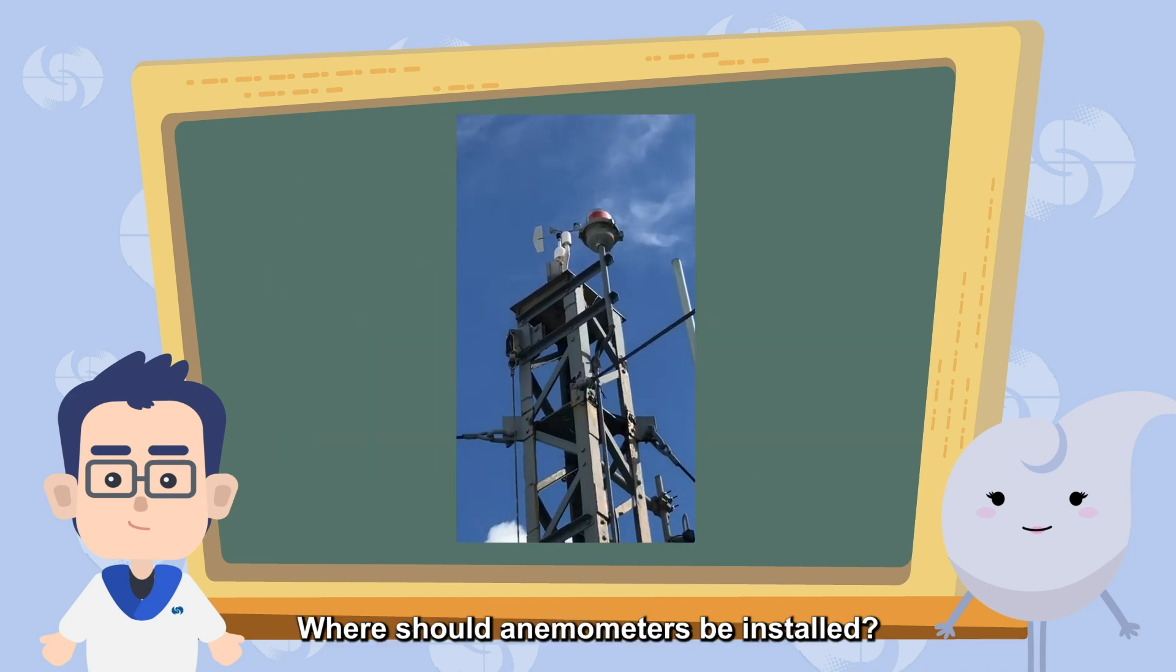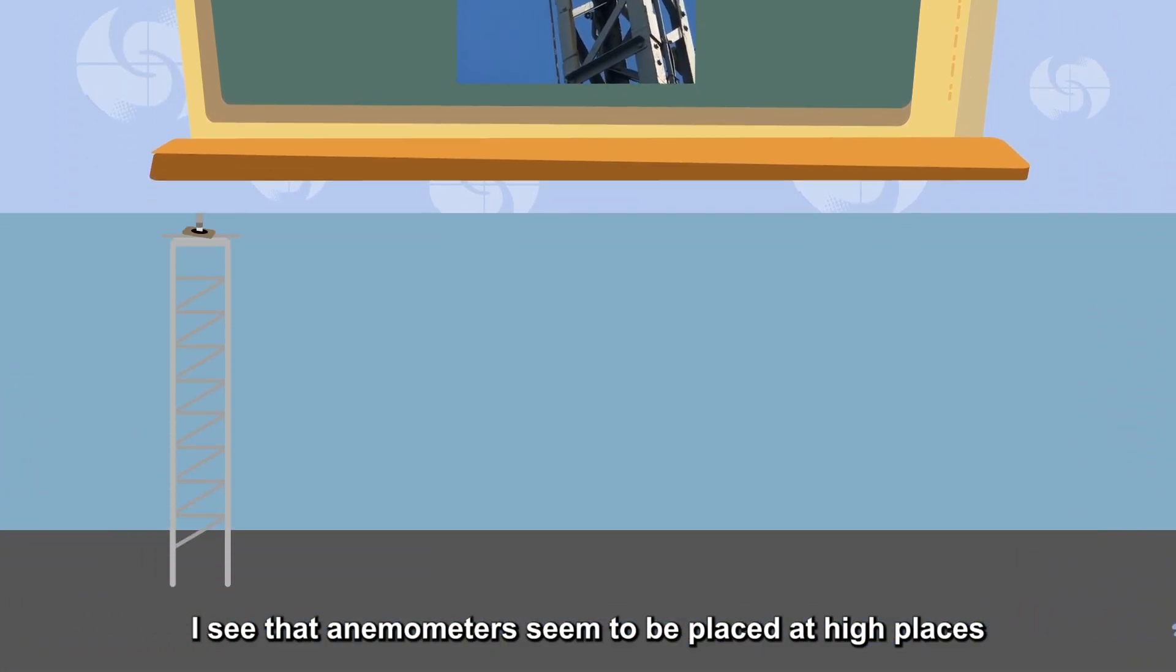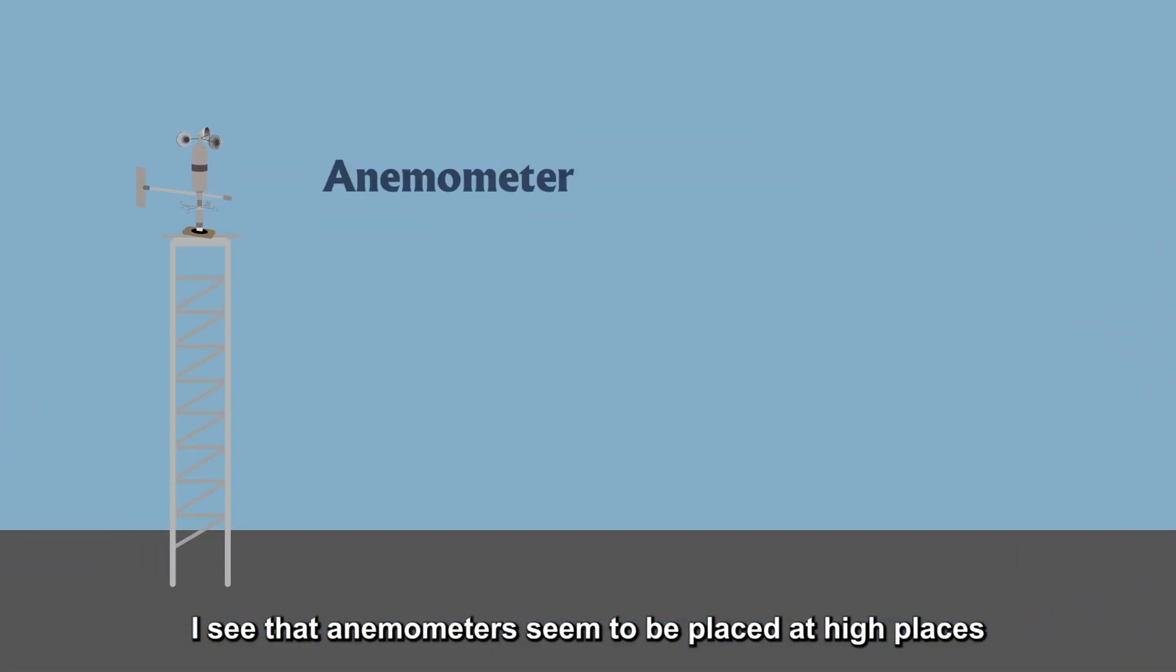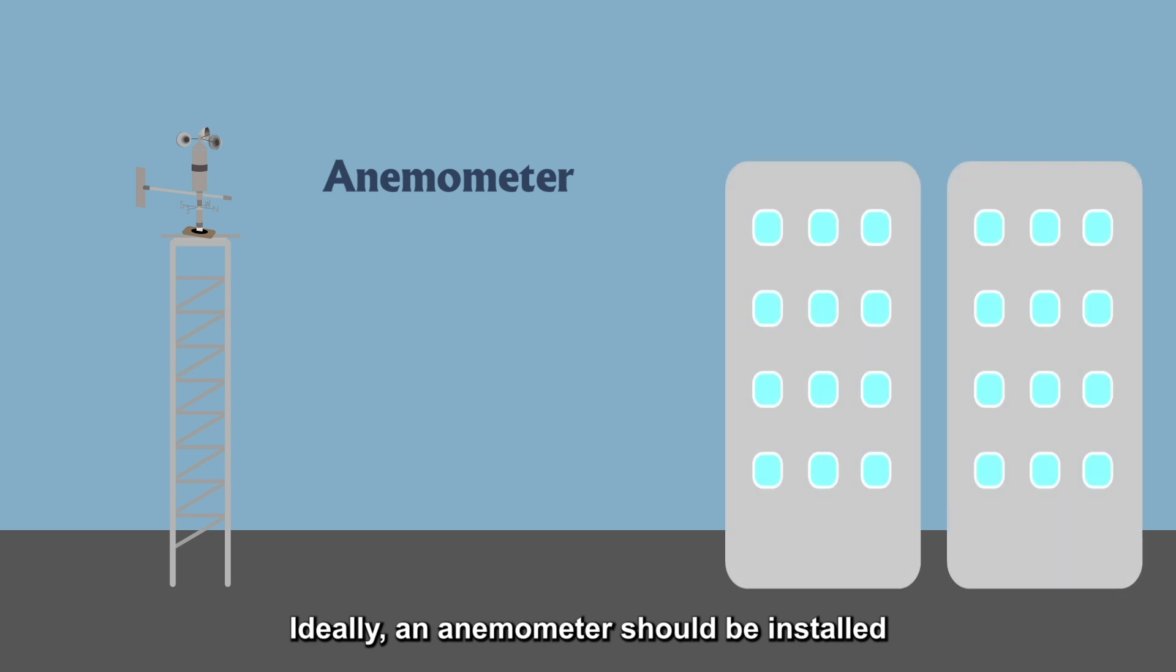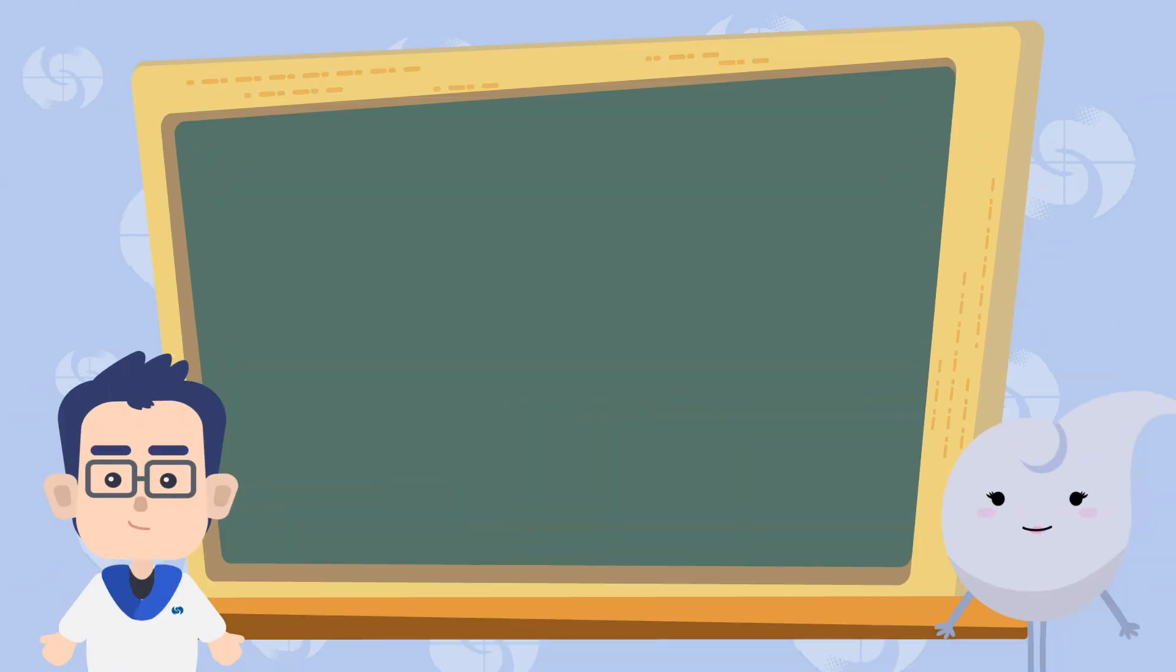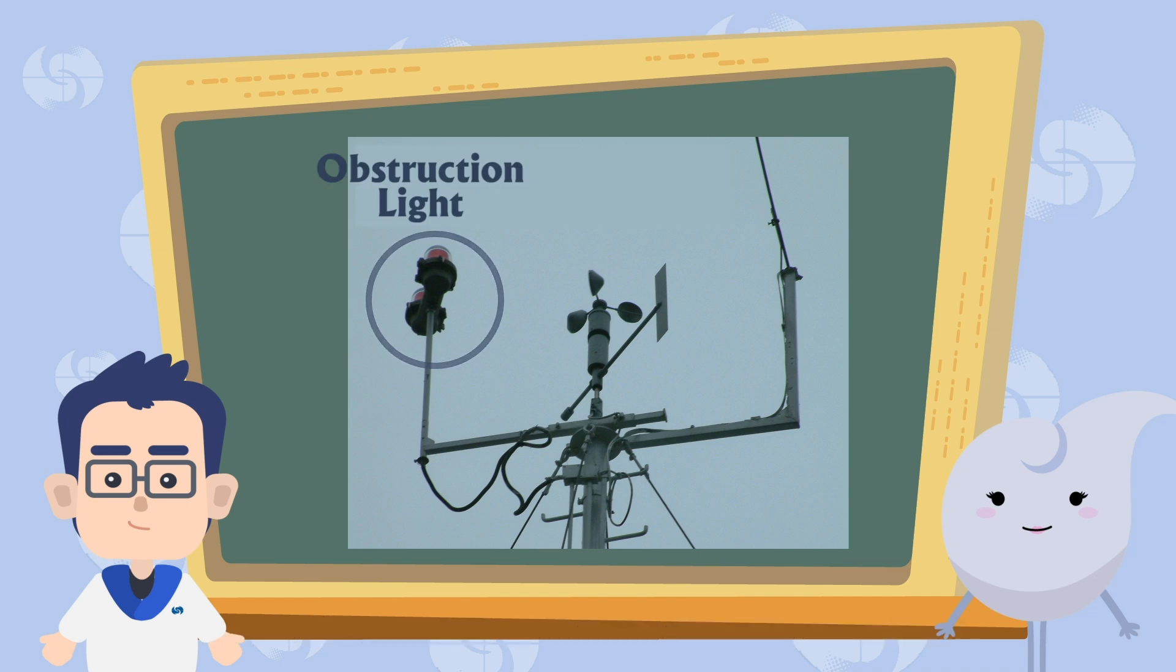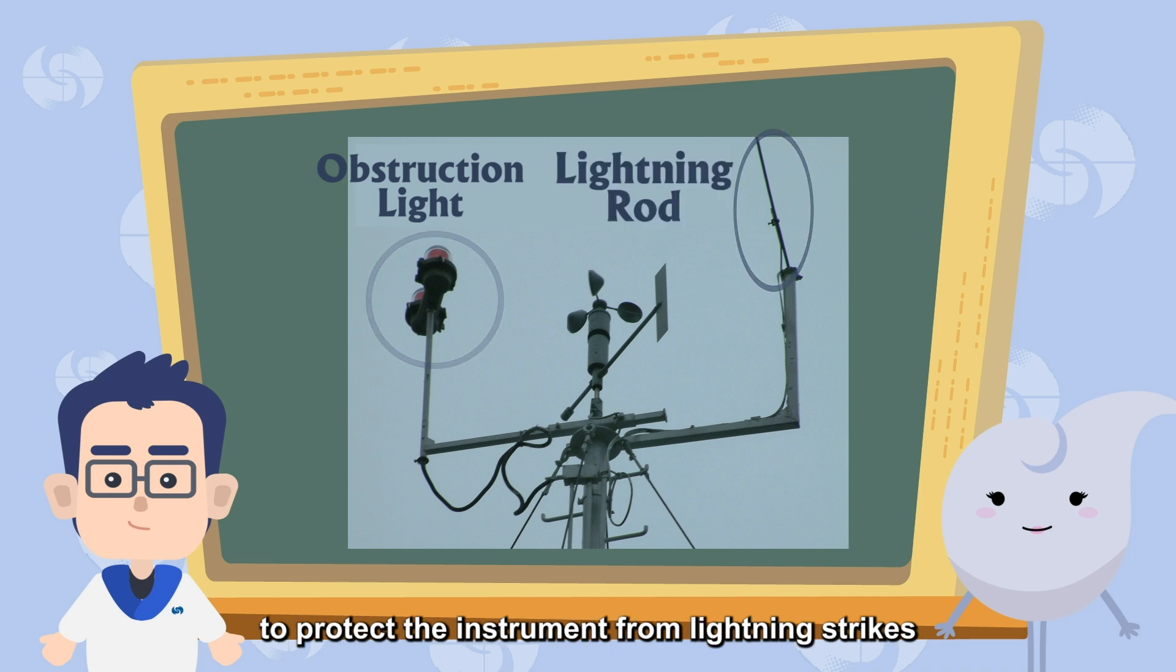Where should anemometers be installed? I see that anemometers seem to be placed at high places. Yes, there are standards for anemometer installations too. Ideally, an anemometer should be installed 10 meters above the ground, and the location should be open and unobstructed. Usually, we will set an aviation obstruction light next to the anemometer to avoid collision by an aircraft, and a lightning rod will be set on the other side to protect the instrument from lightning strikes.